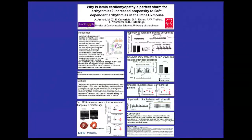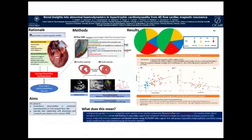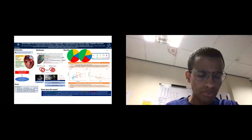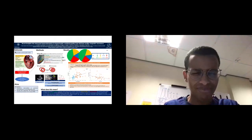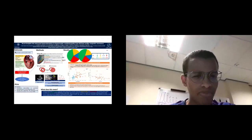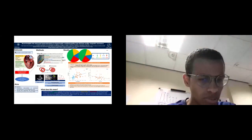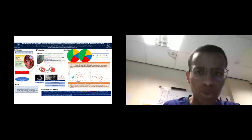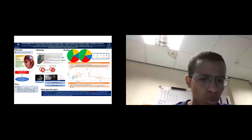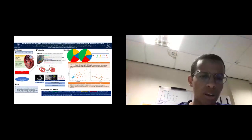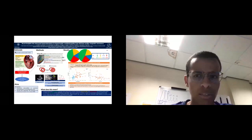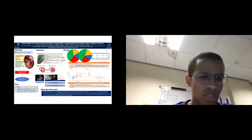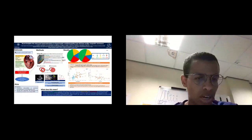The next presentation is from Sakira Ashke on novel insights into abnormal hemodynamics in hypertrophic cardiomyopathy using 4D flow cardiac magnetic resonance. Hypertrophic cardiomyopathy is a cause of sudden cardiac death, heart failure, syncope, and exercise intolerance. Deranged blood flow is central to these complications, but blood flow's dynamic and three-dimensional nature makes it difficult to image by conventional means such as echocardiography. 4D flow CMR is a novel technique that measures blood flow directions within a three-dimensional reconstruction of the heart over time.